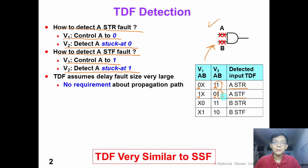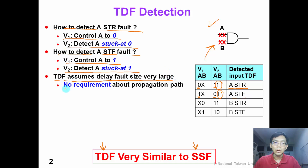From this table, we can see that the detection of transition delay fault is actually very similar to the detection of single stuck-at fault. Please note that transition delay fault assumes the delay fault size is very large, so we do not have any requirement about the propagation path when generating the pattern.